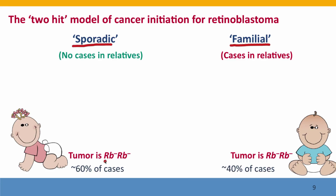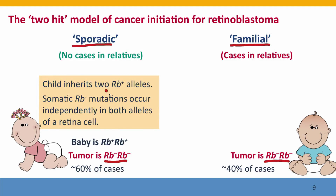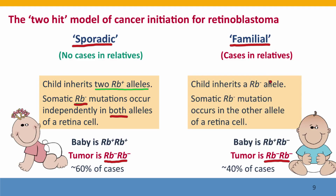In both cases, the tumor has suffered two hits — both alleles of RB are knocked out. But in sporadic retinoblastoma, the child has inherited two functional RB alleles, and it's only during retinal development that mutations have occurred in both alleles in the same retinal cell. In familial cases, the child has inherited one defective allele, so all that's needed is a single somatic mutation in the other allele of any cell in the retina.